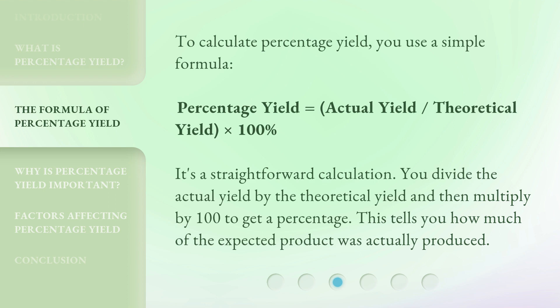You divide the actual yield by the theoretical yield and then multiply by 100 to get a percentage. This tells you how much of the expected product was actually produced.